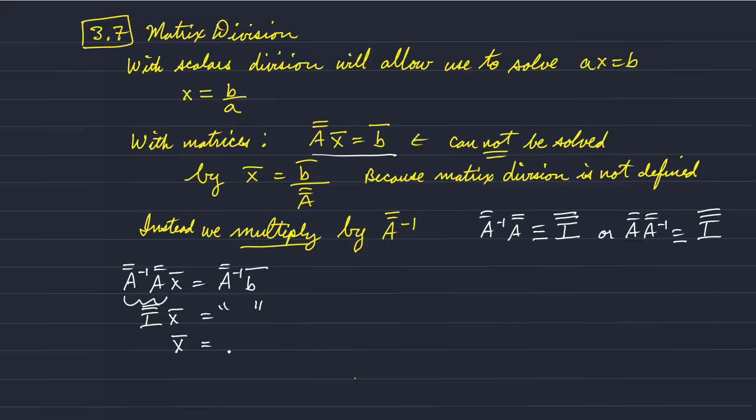So we get X is equal to the inverse matrix for A times the vector B. And that's how we could solve that equation.